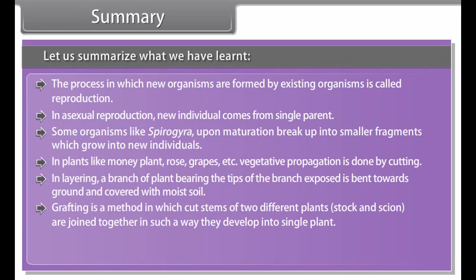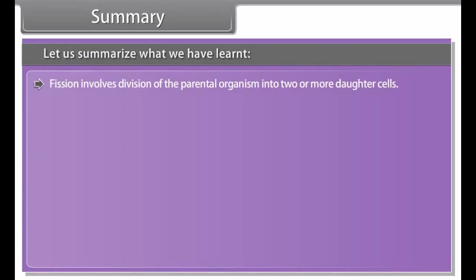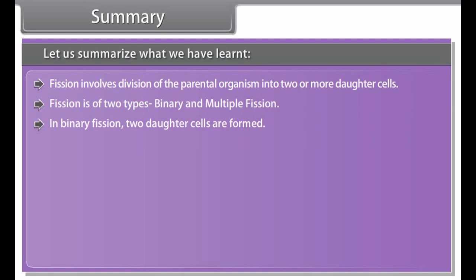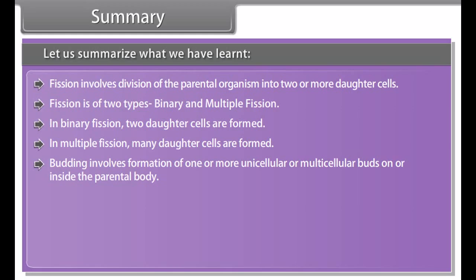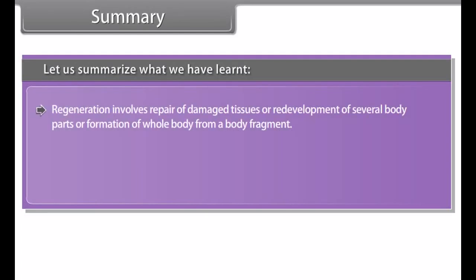During multiple fission in liver, Plasmodium produces about 1000 daughter cells, while during multiple fission inside the red blood corpuscles it produces 12 to 24 daughter cells called merozoites. Reparative regeneration involves repair of damaged cells of the body, for example wound healing and replacement of dead RBCs by new RBCs in man. Regenerative regeneration is the process of redevelopment of a lost body part, for example the tail in lizards, hydra, and planaria. Bulbils are small fleshy specialized buds which, when they fall on the ground, produce new individuals.